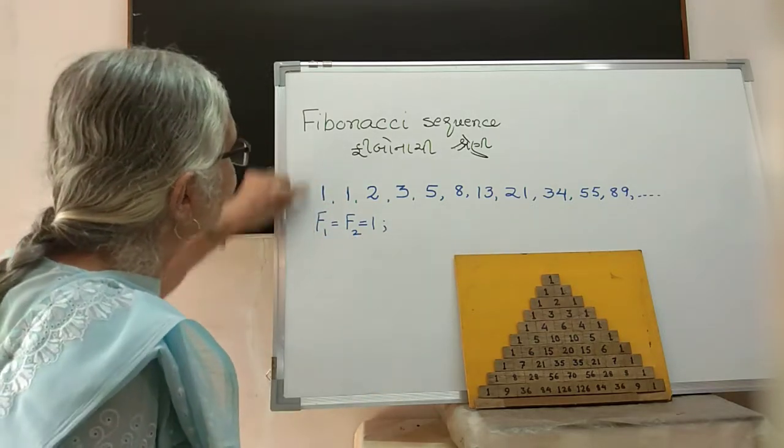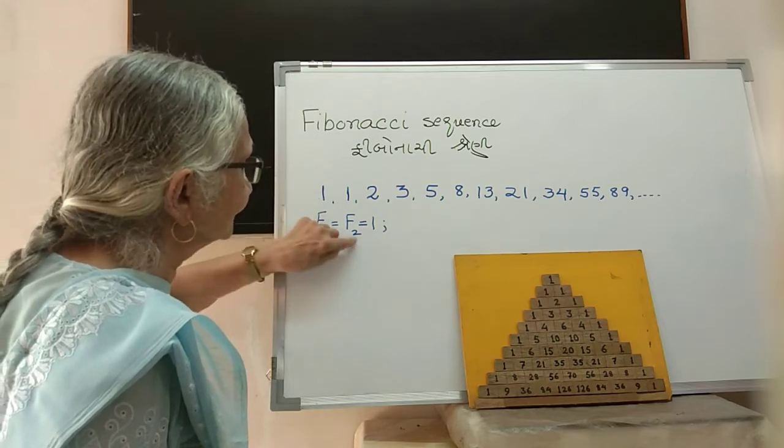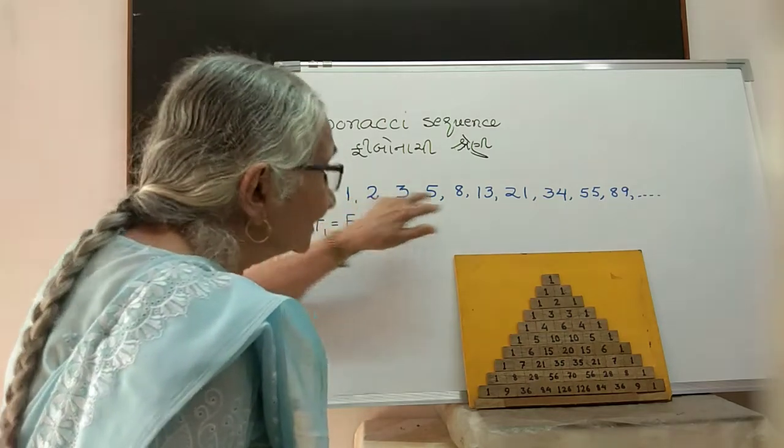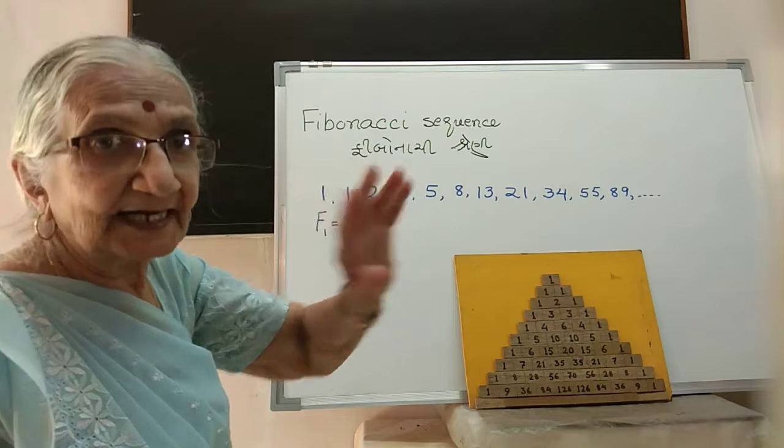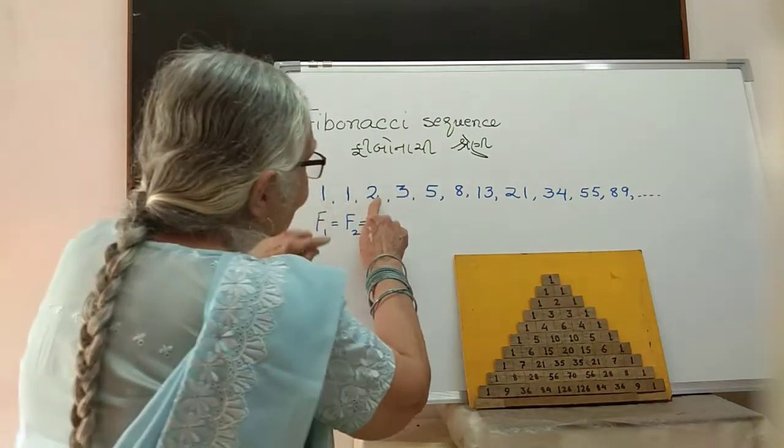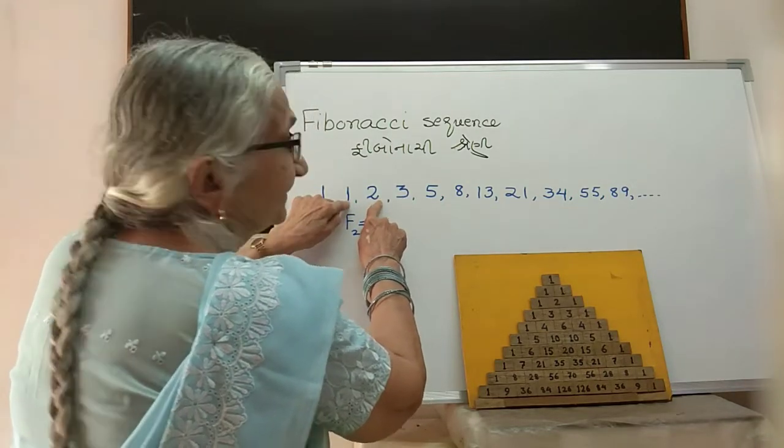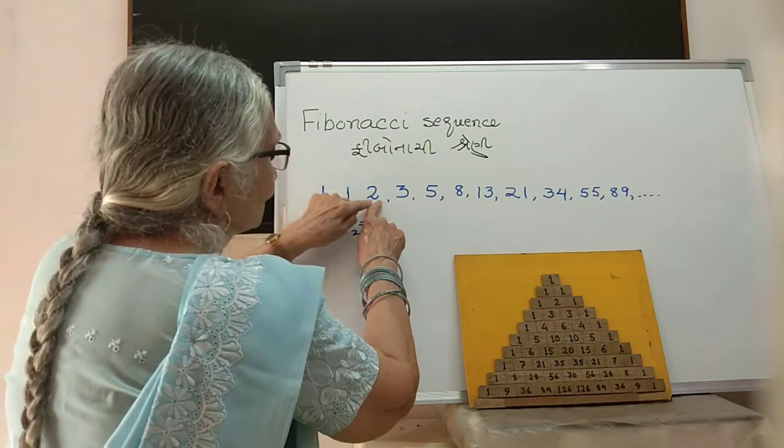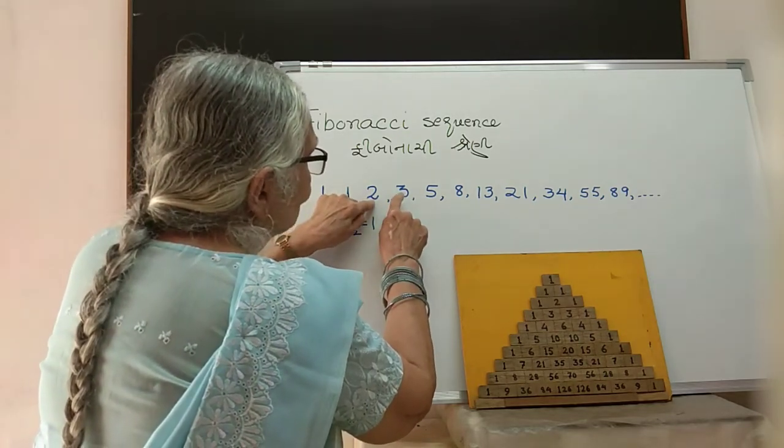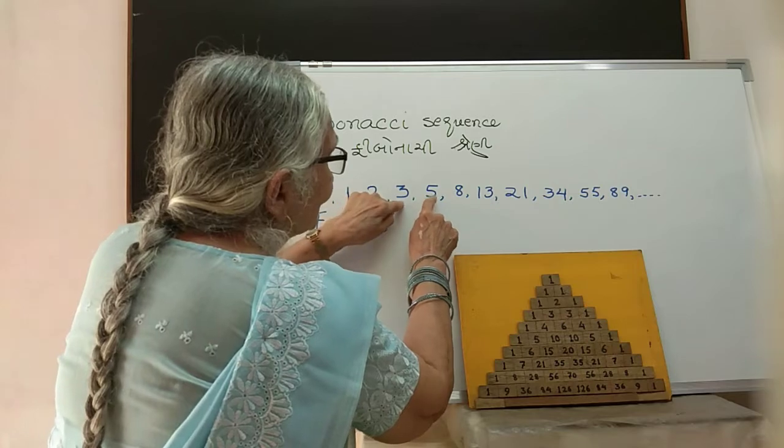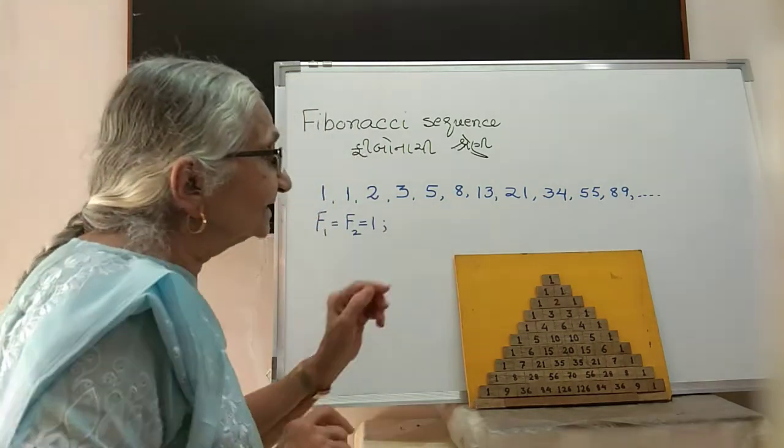Third term onwards there is a pattern, and the pattern is that the third term is the sum of the previous two. 1 plus 1 is 2, 1 plus 2 is 3, 2 plus 3 is 5, 3 plus 5 is 8.